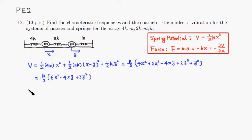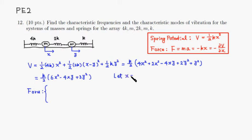Now let's look at the force on each mass. Since we're looking for characteristic frequencies, we assume both masses oscillate at exactly the same frequency. A convenient notation is to write x as x₀ times e^(iωt), where x₀ is just the magnitude.